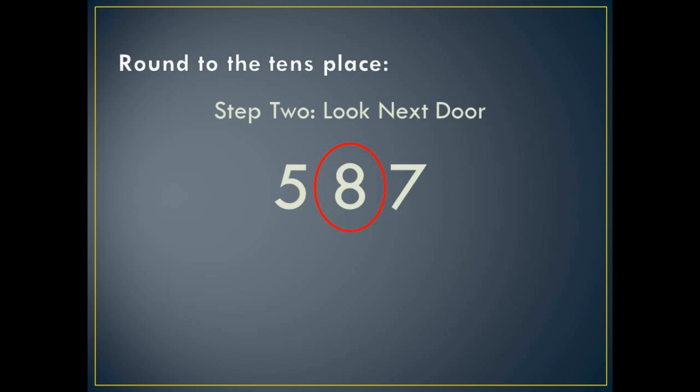Look next door. We always look to the right, so which digit is just to the right of the circled number? Seven. Good job. Draw an arrow to it.